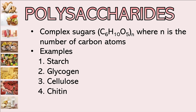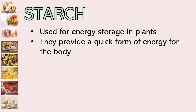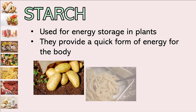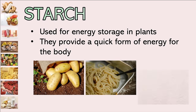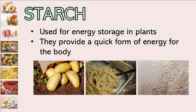Let's start with starch. Starch is used for energy storage in plants and provides a quick form of energy for the body. Carbohydrates in general provide a quick form of energy — that's why some athletes follow a pasta diet. Examples of food from which we can get starch are potatoes, pasta, and rice.